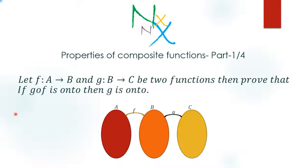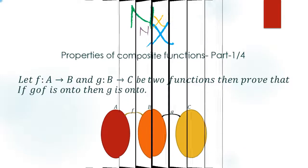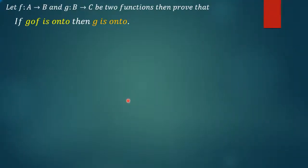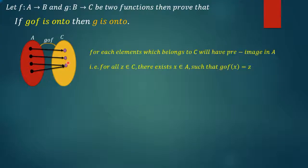We need to prove that if g∘f is onto, then g is onto. First, let us understand what is the meaning of an onto function. It is obvious here that g∘f is a mapping from A to C. The meaning of onto is that for each element which belongs to set C, there will be a pre-image in set A.